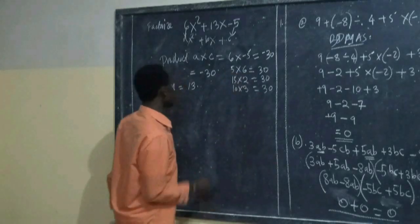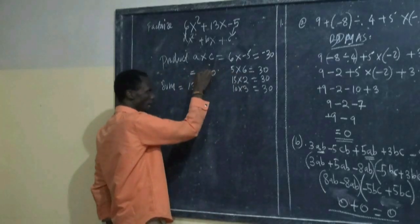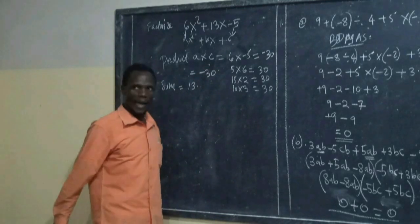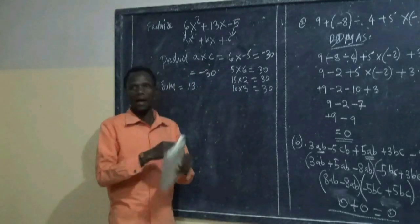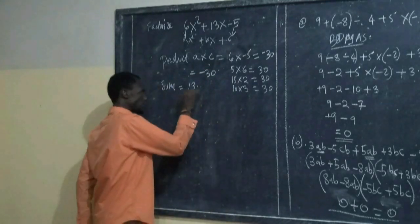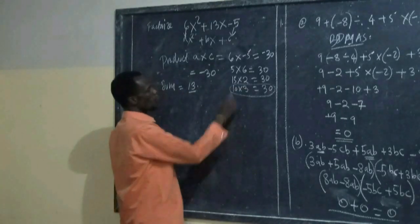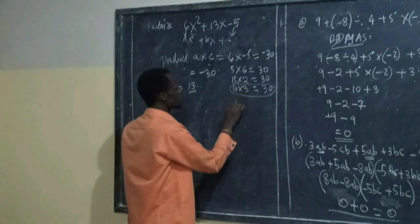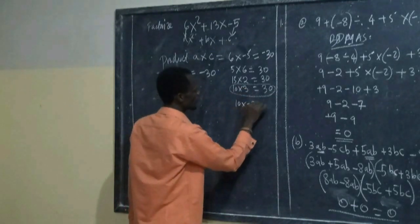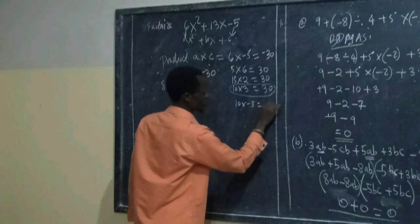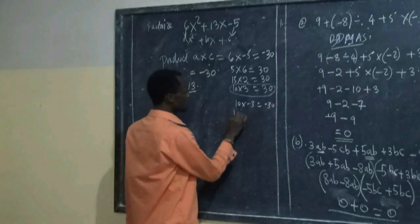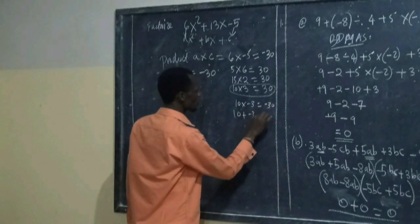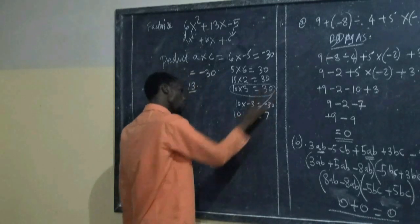But among these factors that you have listed here, they should give you product of negative 30. And if now you add them together, they give you positive 13. Let us put this 10 times negative 3. It is negative 30, but 10 plus negative 3 equals 7. So this is totally wrong.